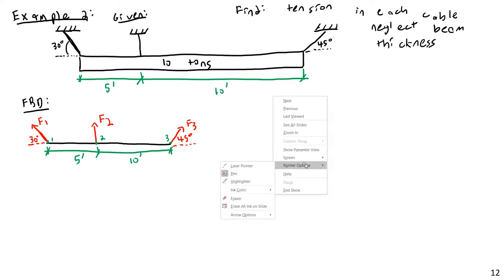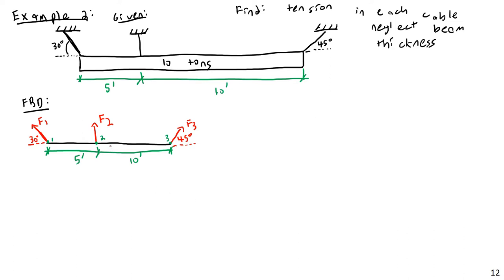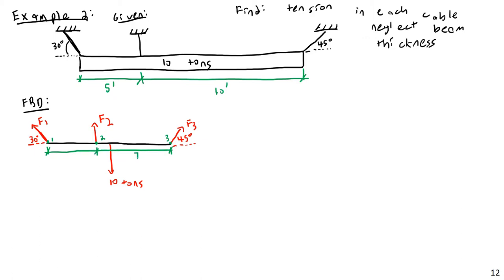Actually, I made a big mistake — we're missing the 10-ton weight of the beam. Weight acts through the centroid, which is 7.5 feet from the right end. That puts it 2.5 feet from cable 2 to the centroid, and 5 feet from cable 1 to cable 2. So: 5 feet, 2.5 feet, and 7.5 feet.